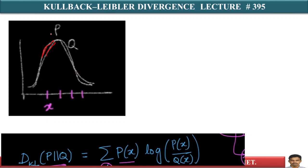It's a very simple concept. If two distributions are very close to each other, this ratio P(x) by Q(x) becomes very close to 1, log 1 becomes 0, and P(x) into 0 is 0. So if these two distributions P and Q are very close, the distance measured by KL divergence will be 0. If they are overlapping, their KL divergence value is 0; otherwise if they are very close, it is a very small value.